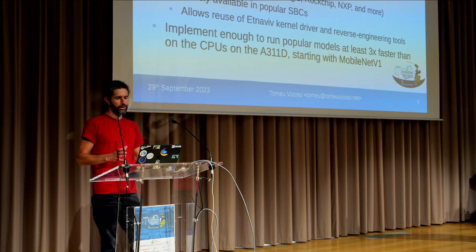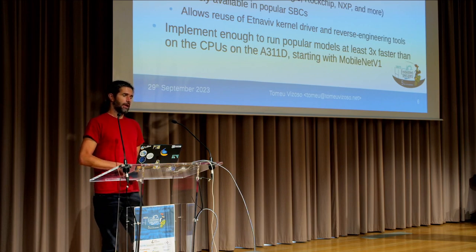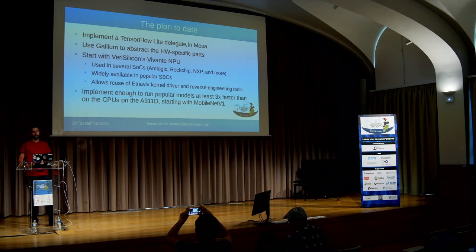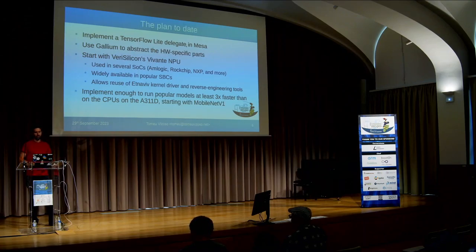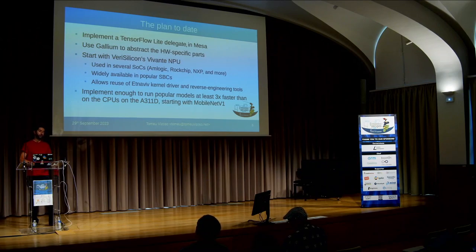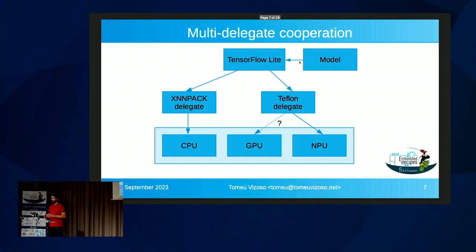The short-term goal is to get a popular model — not one of the latest ones, but one commonly used for object detection — to be usefully fast. Three times faster than the CPU, I think that could already be useful. This specific model I'm targeting, MobileNet version one, when you run it on the NPU it's 50 times faster than when you run it on the CPU at full speed. So we will be freeing the CPU fully. I think three times faster should be achievable — I'm not yet there, but.